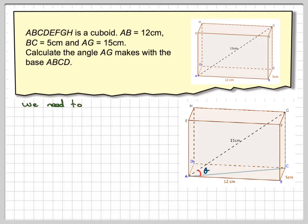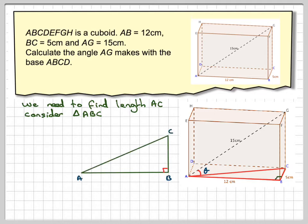Now in order to do that, we should consider using the triangle ABC, which is this one here, where it's right-angled as well. So drawing that out in 2D, AB is going to be 12 cm, BC is going to be 5 cm, and we need to find this length here, which corresponds to this length here.